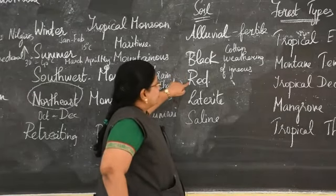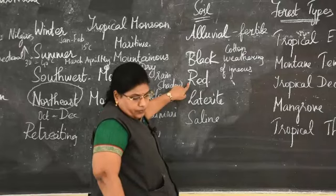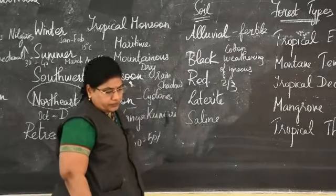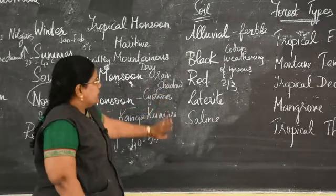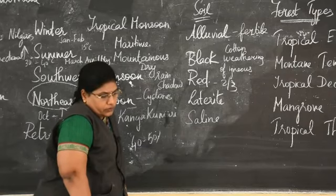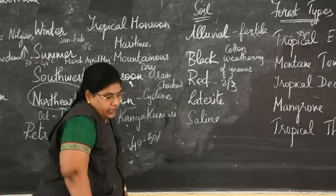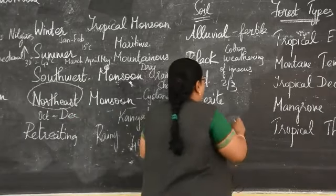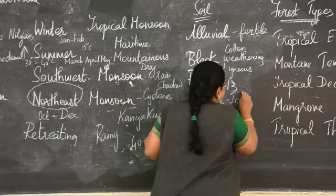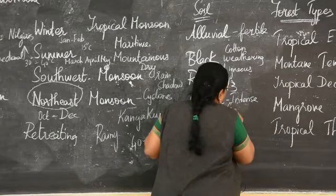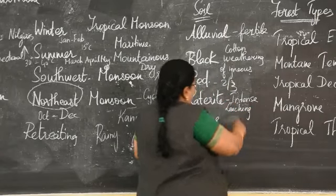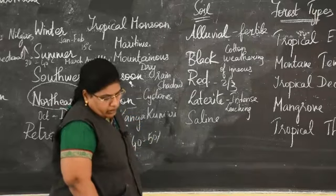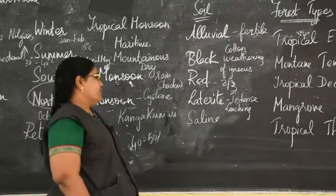Red soil is a very important soil found in Tamil Nadu. Nearly two-thirds of the area of Tamil Nadu is covered by red soil, found mostly in the central districts. Sivagangai and Ramanathapuram districts have red soil. Laterite soil is formed by intense leaching and is found in parts of Kanchipuram, Thiruvallur, Thanjavur, and some parts of the Nilgiris.